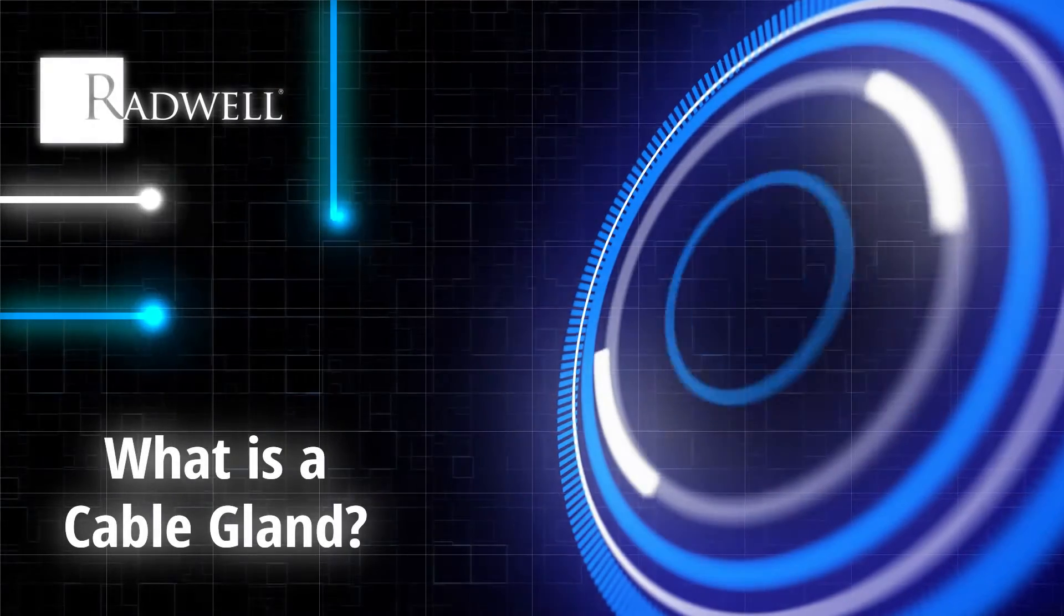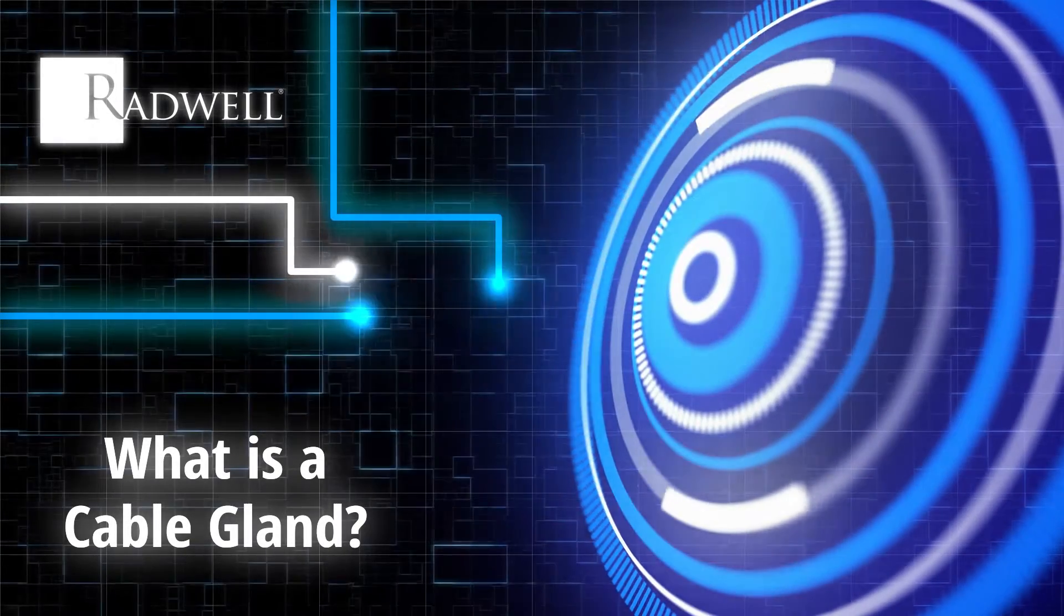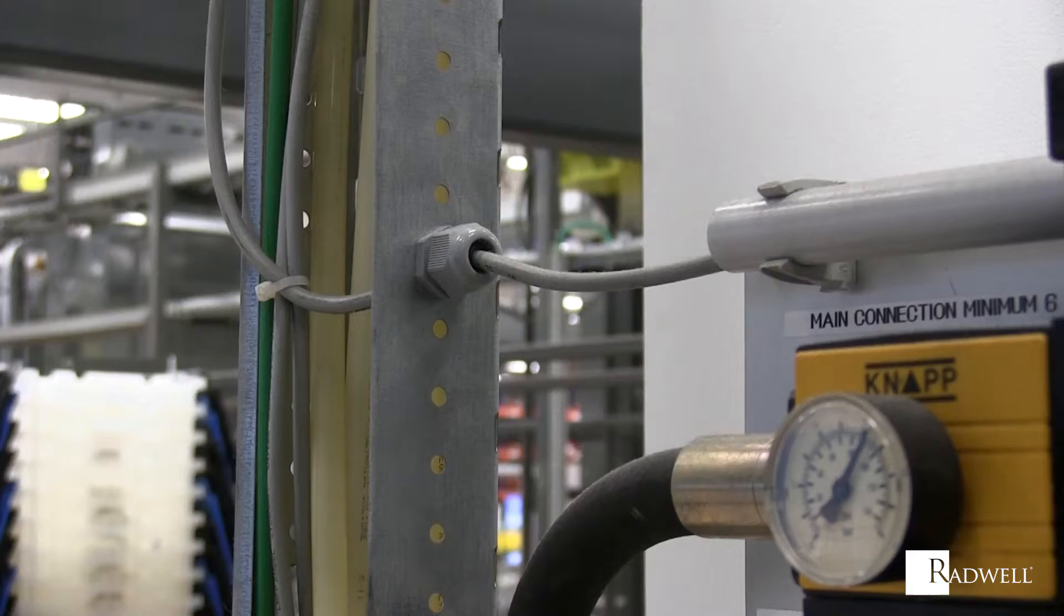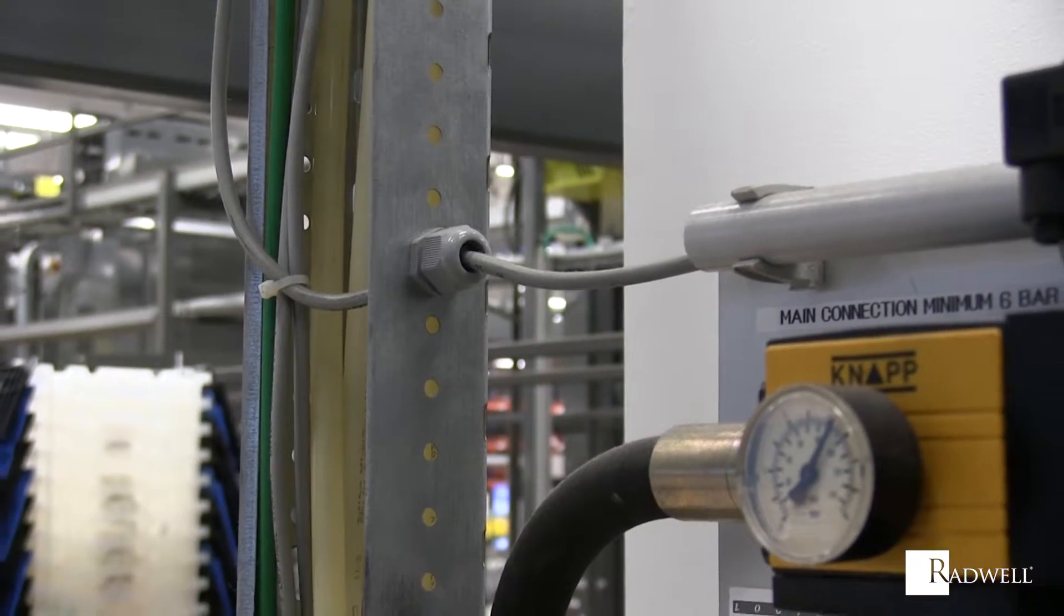What is a cable gland? A cable gland is a device designed to attach, secure, seal, and terminate the end of a wire to specific equipment.